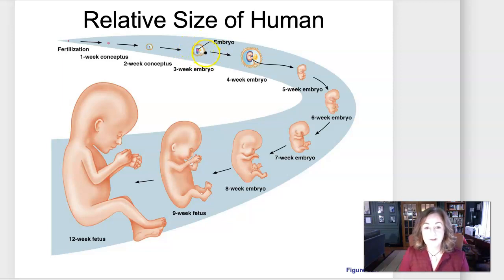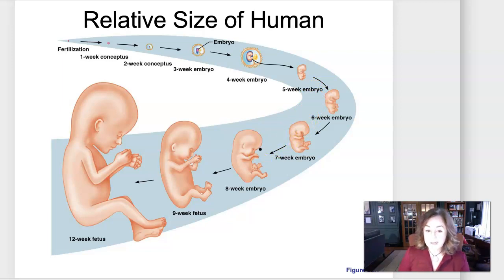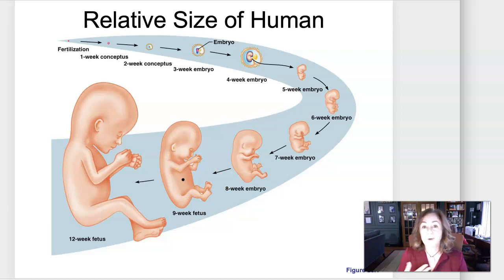From there, embryonic development will proceed and lay down the groundwork for all of the organ systems — the ones we talked about in AP1 and will continue in AP2. Once all of the organ systems are in place in a rudimentary, precursor form, that's the point when the offspring is considered a fetus. Embryonic development goes from week three to week eight, and then from week nine onward the offspring is considered a fetus through the rest of gestation.